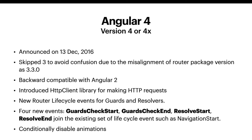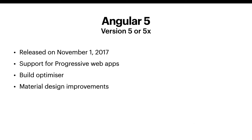After Angular 4, Google introduced Angular 5, released on November 1, 2017. It was the first version of Angular to support Progressive Web Apps. It also had a built-in optimizer for optimizing code and improvements related to UI designs using Material Design.